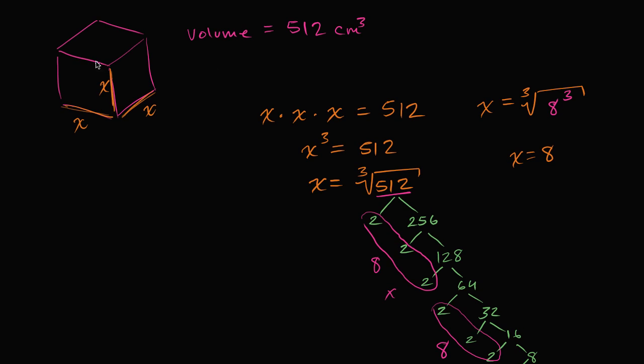So if the volume here is 512 cubic centimeters, each dimension is going to be 8 centimeters. So x is equal to 8 centimeters. This is equal to 8 centimeters. I'm just writing the units now. This is equal to 8 centimeters, and we're done.